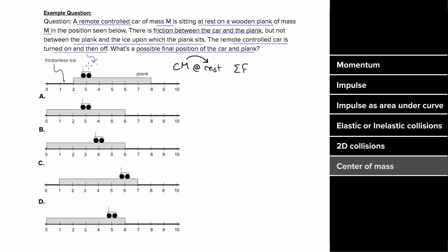Where is the center of mass? Well, the car's mass is at three. The plank's center is at five. So the center of mass between the car and the plank would be at the location of four.